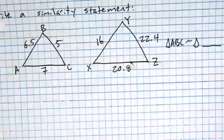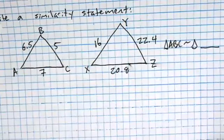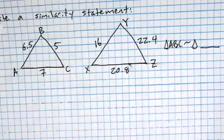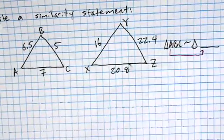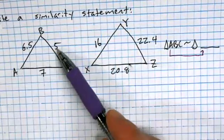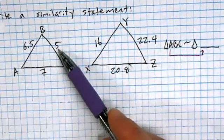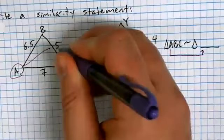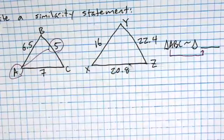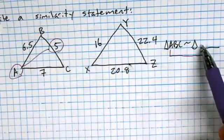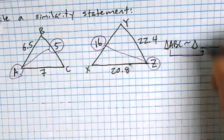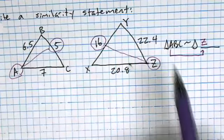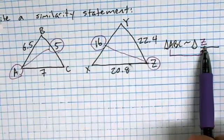Let's go over the similarity statement. When we do this, we have to match A up with the right letter in the other triangle. A is across from five, which is the smallest side. So we want Z to come first, because Z is also across from the smallest side in the second triangle, keeping everything consistent.